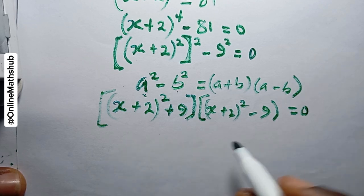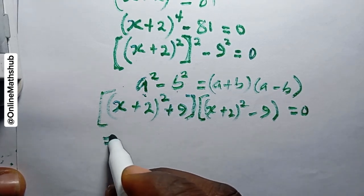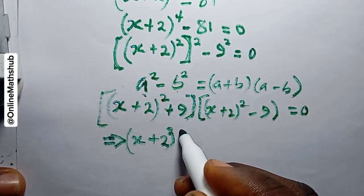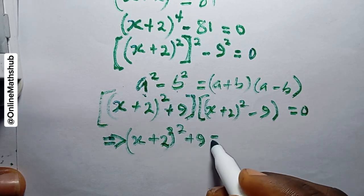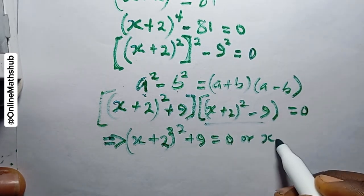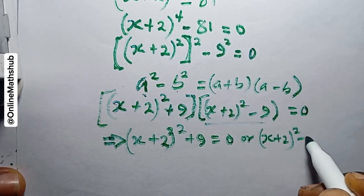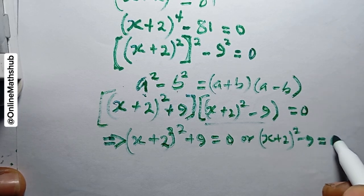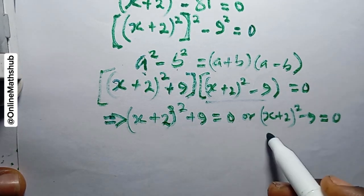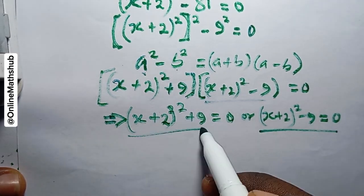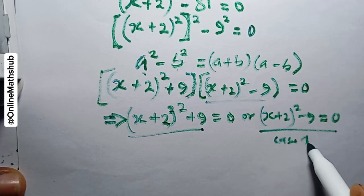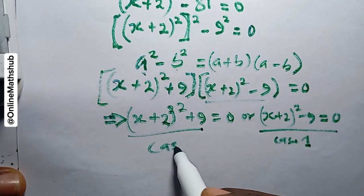We apply the zero product property, which means either (x + 2)² + 9 = 0 or (x + 2)² - 9 = 0. Let's call these Case 1 and Case 2. I'll solve Case 1 first — that's (x + 2)² - 9 = 0 — and then come back to Case 2.